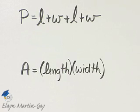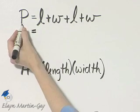Let's now find the perimeter and the area of the given rectangle. Remember, perimeter means distance around. So how would we find the distance around or the perimeter?